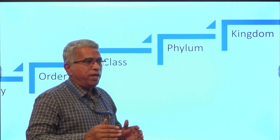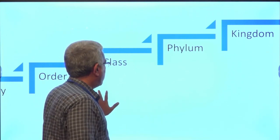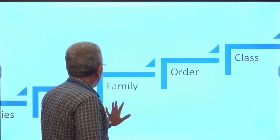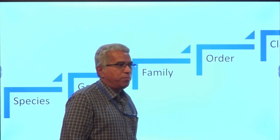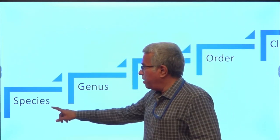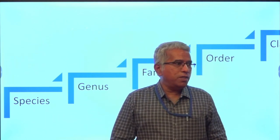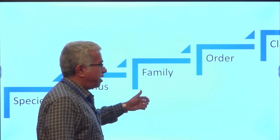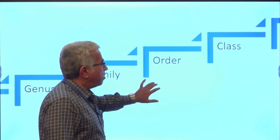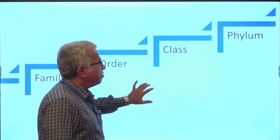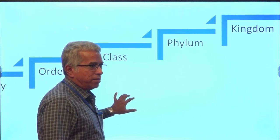Let us take one example — where a human being can be placed in this taxonomical category. The scientific name of a human being is Homo sapiens: sapiens is the species name and Homo is the genus name. Hominidae is the family, Primates is the order, Mammalia is the class, Chordata is the phylum, and the kingdom is Animalia.